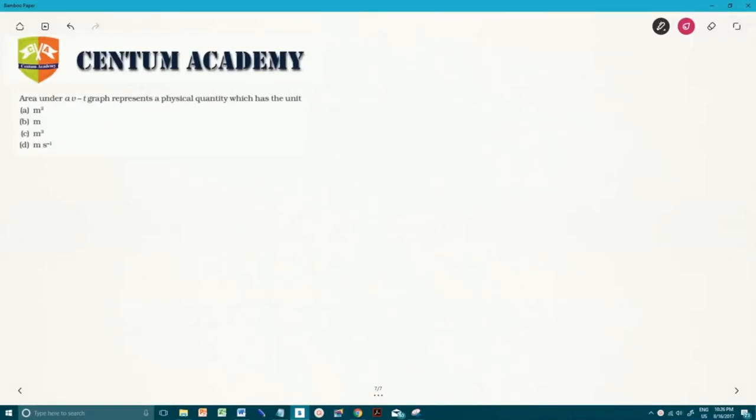Hi, in this question it's given that it is asking about area under a Vt graph represents a physical quantity which has the unit. So basically we have to find out what does the area under a Vt graph represent. What is being asked? It's asking about area under a Vt graph.